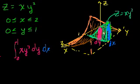And if we want to figure out the entire volume under this surface, between the surface and the xy plane, given this constraint to our domain, we just integrate from x is equal to 0 to 2.